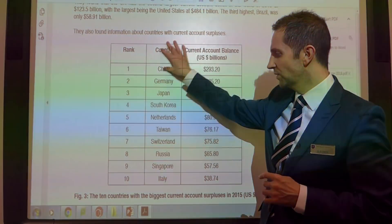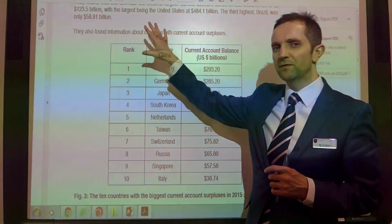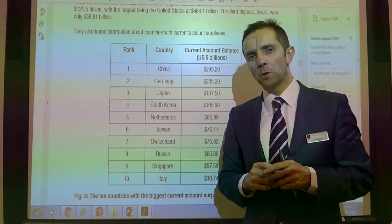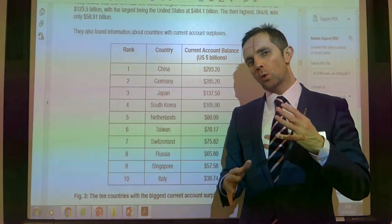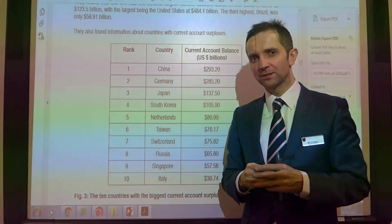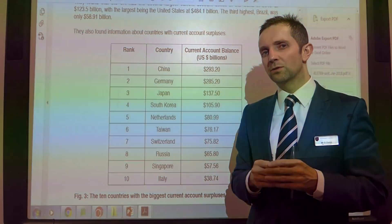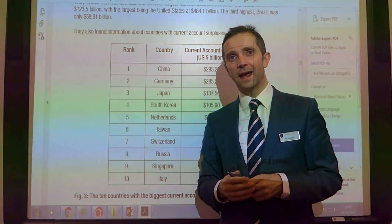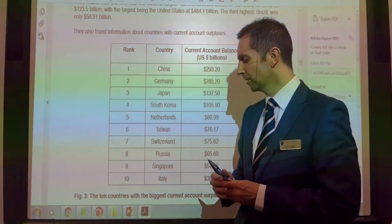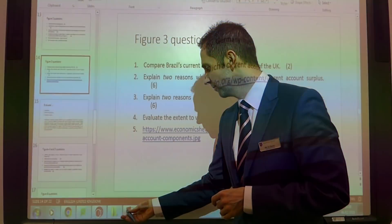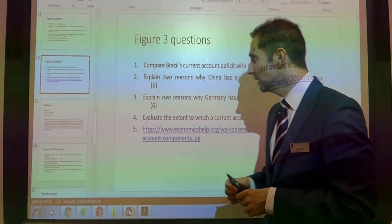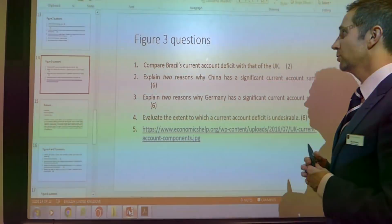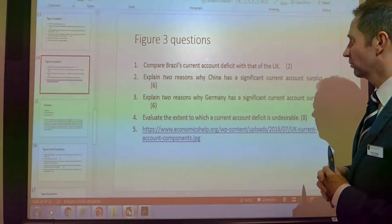And then we move into figure 3 where we've got some information about a current account surplus. I want to maybe just refer you to some questions which I think are likely to appear and talk you through how you might go about answering some of those questions, and also point you to some past papers and exemplar material.